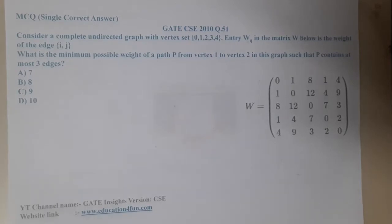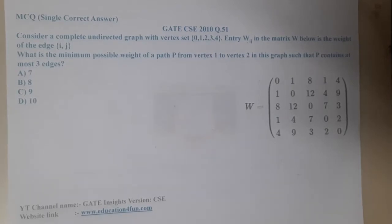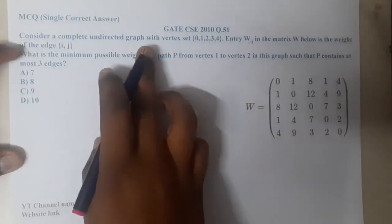Hello guys, we are back with our next lecture. In this lecture, let us continue with the next question. Basically, this question is a continuation of the previous question. Consider a completely undirected graph with vertices 0, 1, 2, 3, 4.